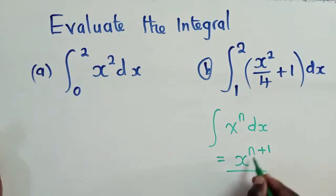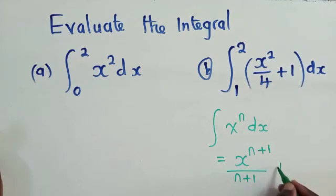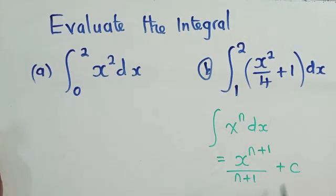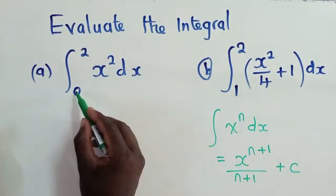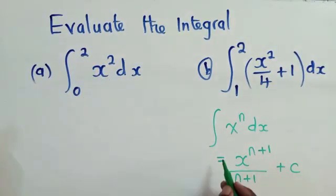You always add a one, and then you divide by your new power. So this is our new power, divide it right there, then you say plus C. This C is simply the constant.